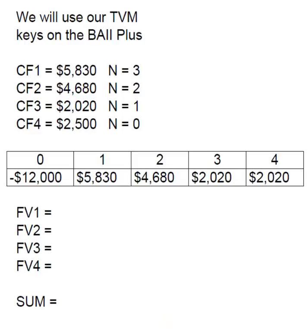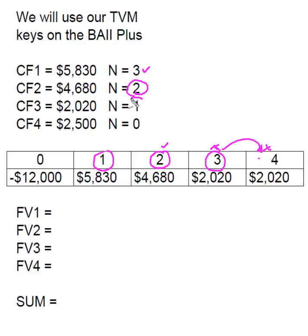Using the time value of money keys on the BA II Plus, we first need to figure out the N for each cash flow. The cash flow in year one is going to grow for three years out to year four, so N equals three. Cash flow two has two periods to grow, so N equals two. Cash flow three grows only one year to year four, so N equals one. And cash flow four, received at year four, has no time to grow, so N equals zero.